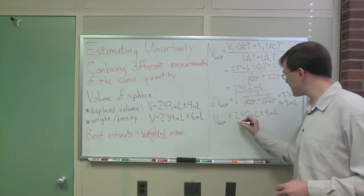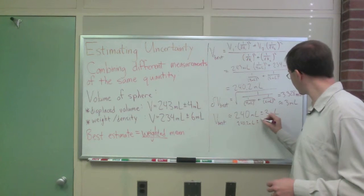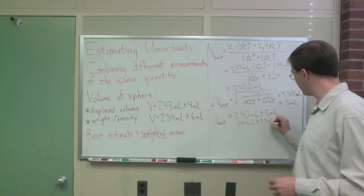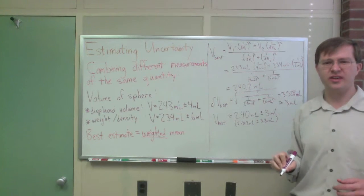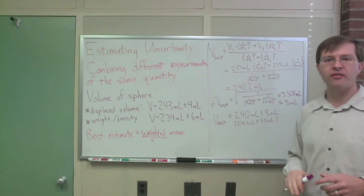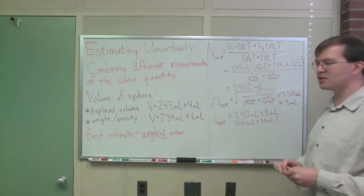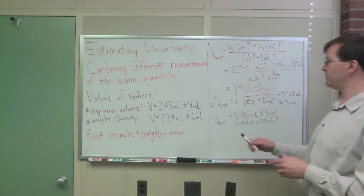If you wanted to, you could have said 240.2 milliliters plus or minus 3.3 milliliters. That would be okay as well. Three, I usually just keep one sig fig. I'm sort of up in the air. So, okay. That's how I report my volume in this case. I've combined the two. So, this is the best estimate that you're going to get for the volume in this case.